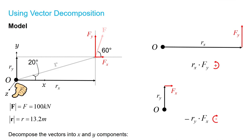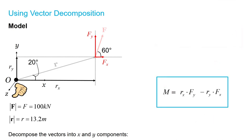The total moment at point O will just be the summation of these two moment components, so we get that our moment is equal to Rx times Fy minus Ry times Fx.